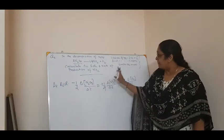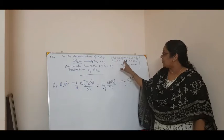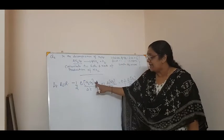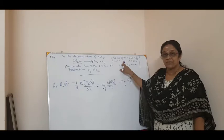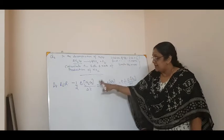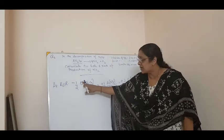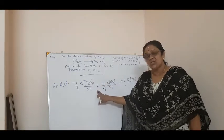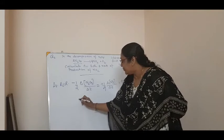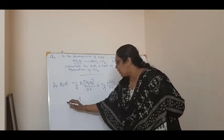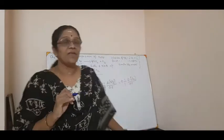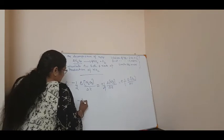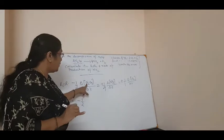They have given you the initial and the final concentration of N₂O₅. So you can find delta N₂O₅. Delta means R2 minus R1 — yesterday we talked about R2 minus R1 by T2 minus T1. So, the average rate of reaction is equal to minus 1 by 2 into delta N₂O₅. What is the final? That is 2.08 minus 2.33.